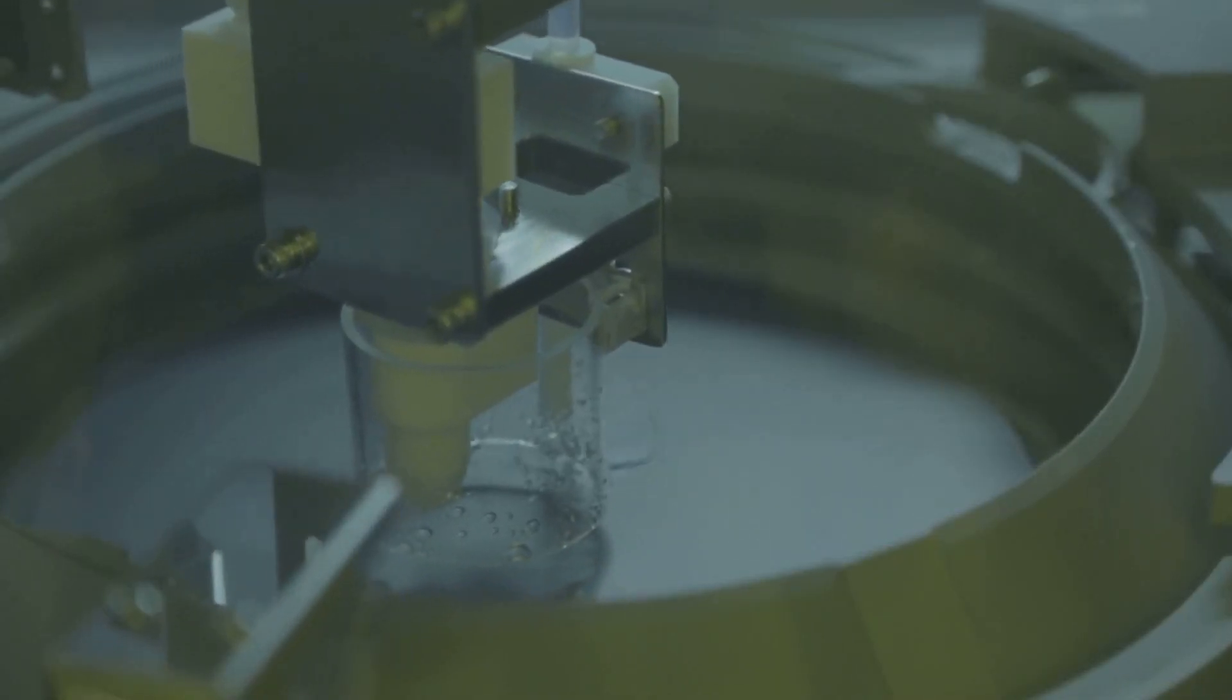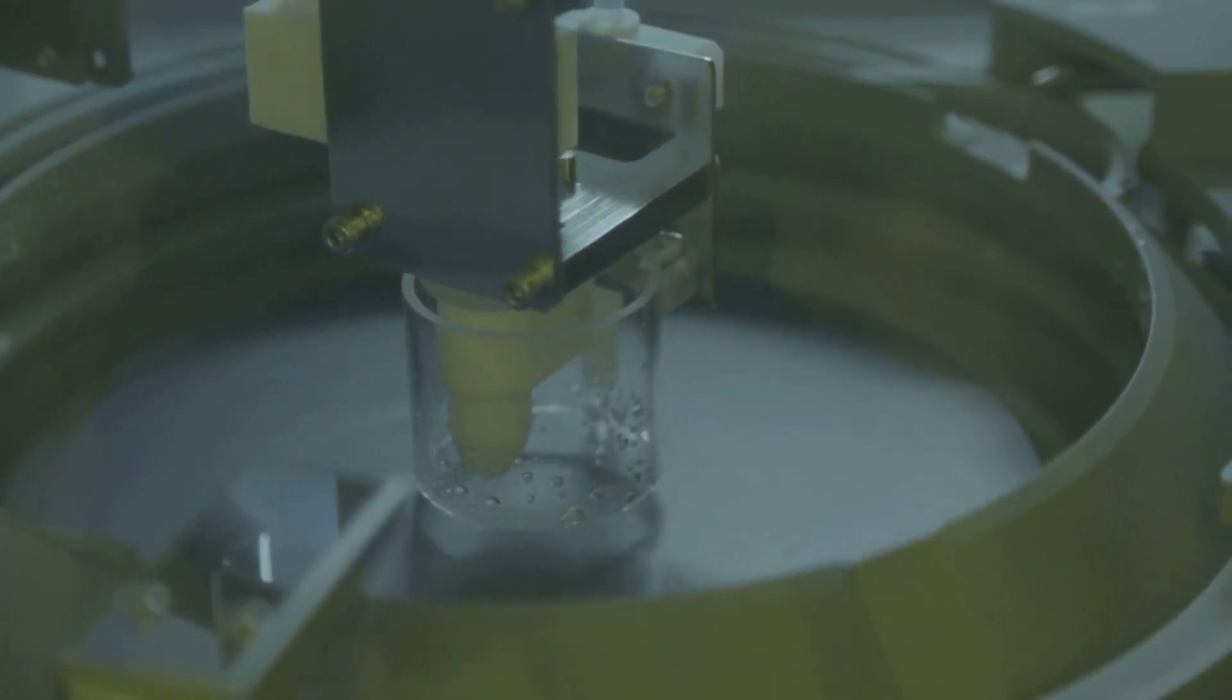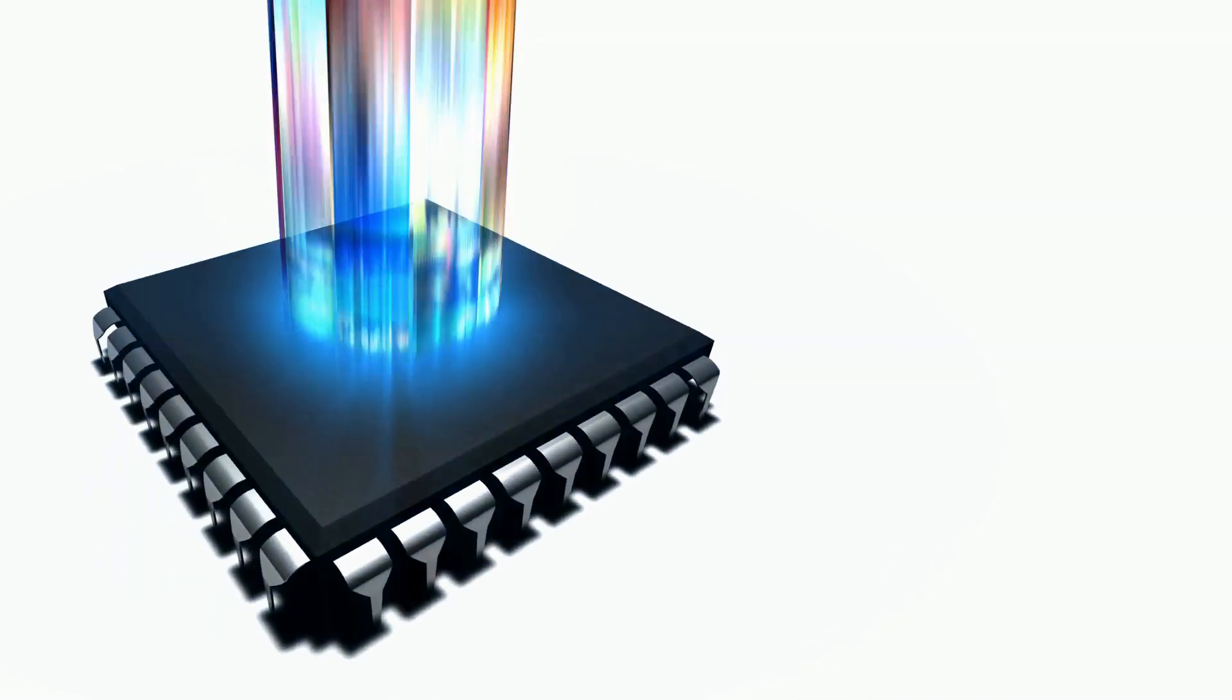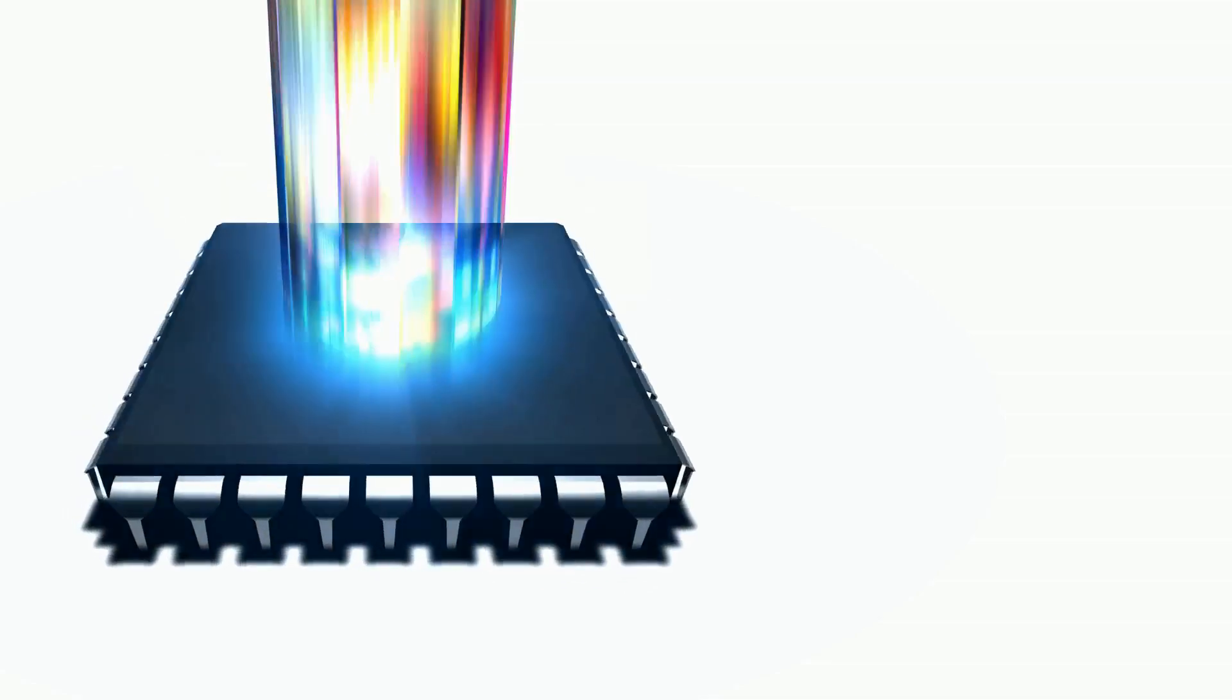Inside the machine, everything happens in a vacuum, an environment meticulously maintained to ensure optimal performance. This is because EUV light is easily absorbed by air, making a vacuum essential for its proper transmission.